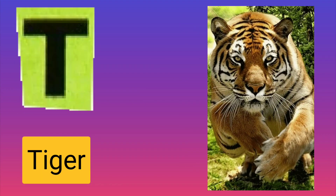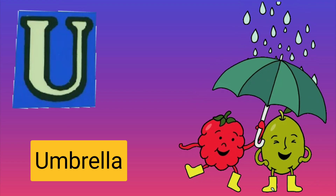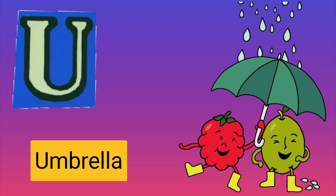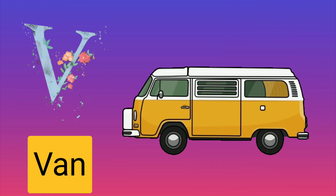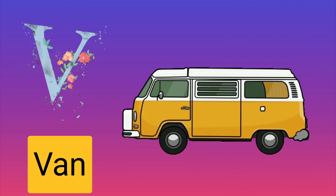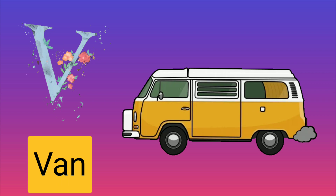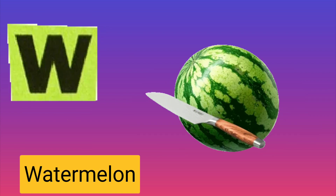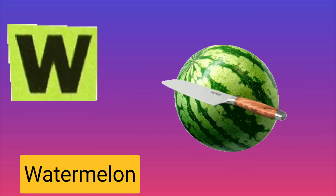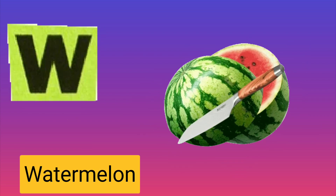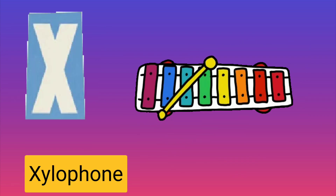T for tiger, U for umbrella, V for watermelon, W for watermelon.